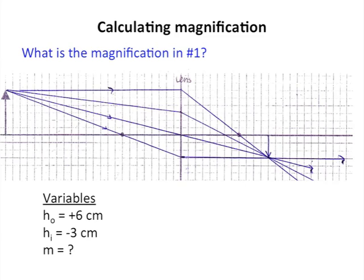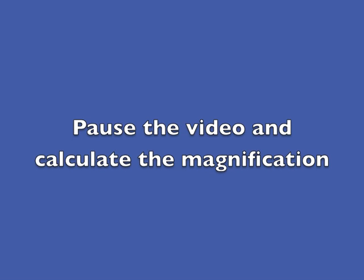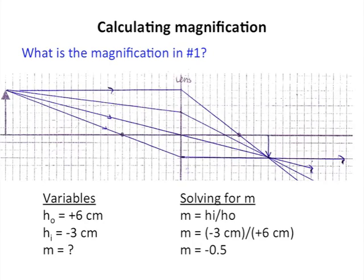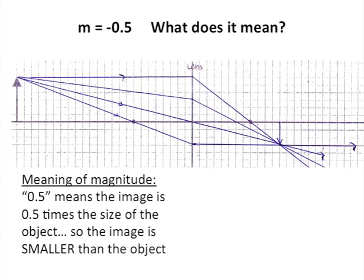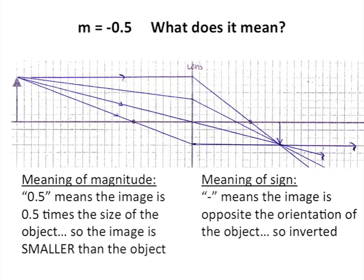Let's do another example. Take a look at number 1 on the front side of the page. Looking at the diagram, the object height is 6 centimeters and the image height is negative 3 centimeters. Substituting, we find negative 3 divided by 6 is negative 0.5. The magnitude 0.5 means the image is 0.5 times the size of the object — the image is smaller than the object. The negative sign means the image is opposite the orientation of the object, so it's inverted.